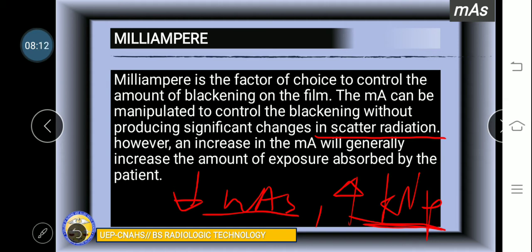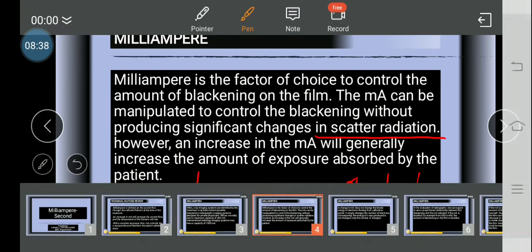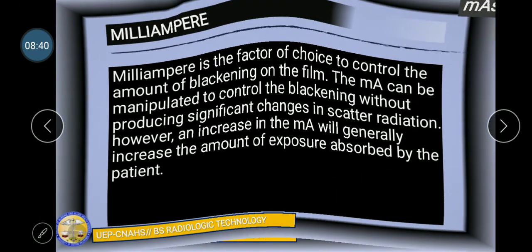In our radiation protection, we need the lowest possible mAs combined with the highest KVP. There are remedies for scatter radiation. Lower number of photons but higher penetrability or energy of the radiation.